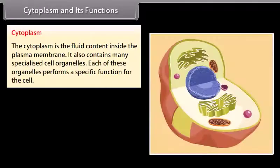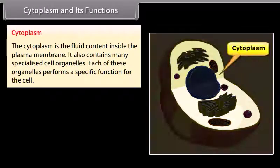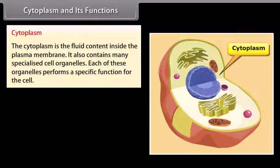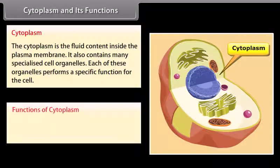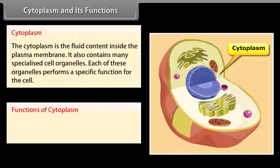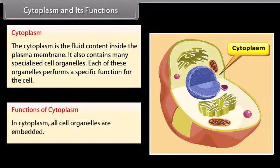Cytoplasm and its functions: The cytoplasm is the fluid content inside the plasma membrane. It also contains many specialized cell organelles, each of which performs a specific function for the cell. All cell organelles are embedded in the cytoplasm.